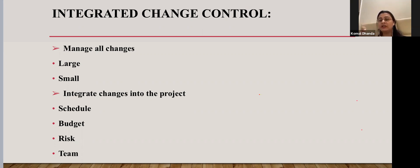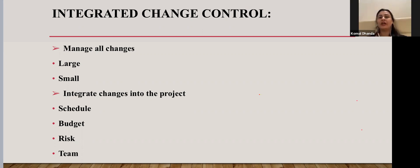When consolidated monthly, small changes together become a significant change that may require formal approvals. All changes — for any pre-approved, documented project fact — including scope, direction, and team quality — need to be documented together and integrated into the project change process.